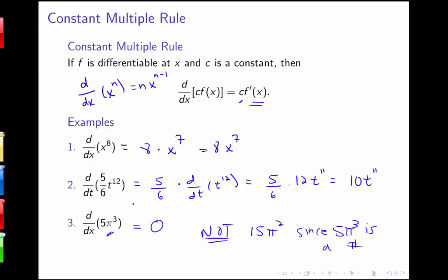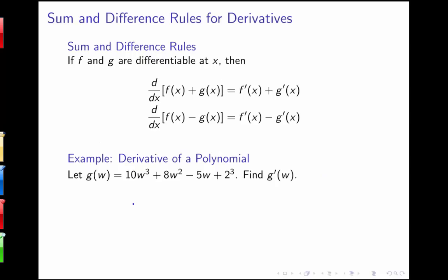We need to put a couple more rules together and then we'll be able to take derivatives of polynomials. The last rule we need is to be able to add up terms and take the derivative of each term in a sum or difference. If f and g are differentiable functions, then the derivative of the sum f+g equals f prime plus g prime, and the derivative of the difference f−g equals f prime minus g prime. Since polynomials are just sums and differences of a constant times a power, all of these rules now allow us to take the derivative of a polynomial.